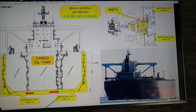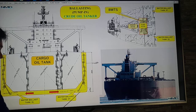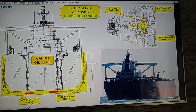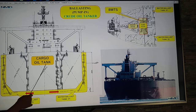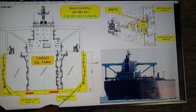Inside the crude oil tanker, we have the cargo oil tank and a double hull, so we have the water ballast tank. When we unload the cargo oil from the cargo oil tank, in order to maintain the stability of the vessel, we have to pump seawater inside our water ballast tank, both on starboard side and port side.